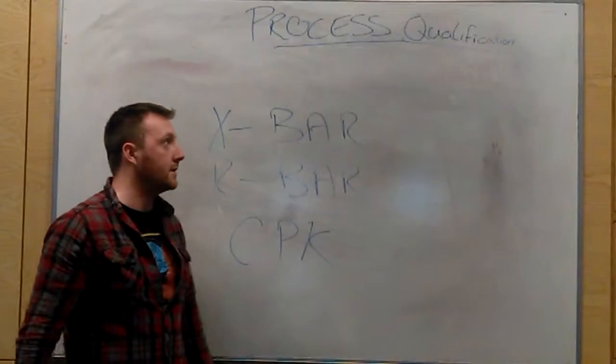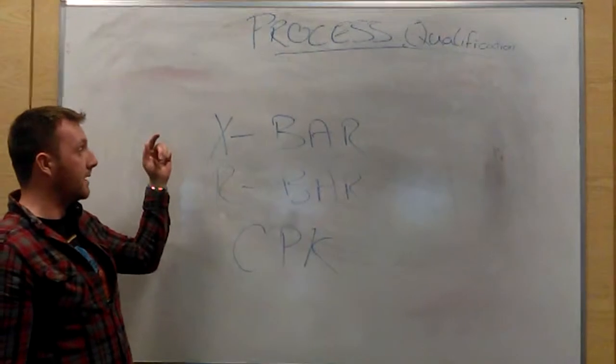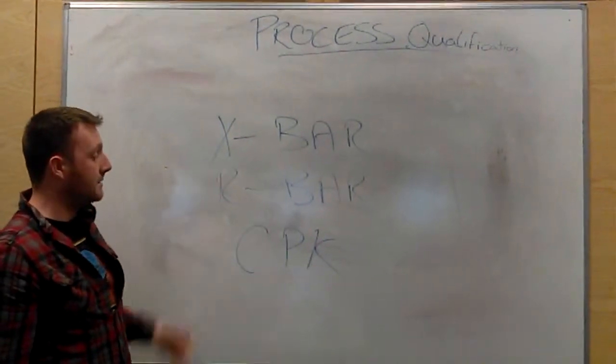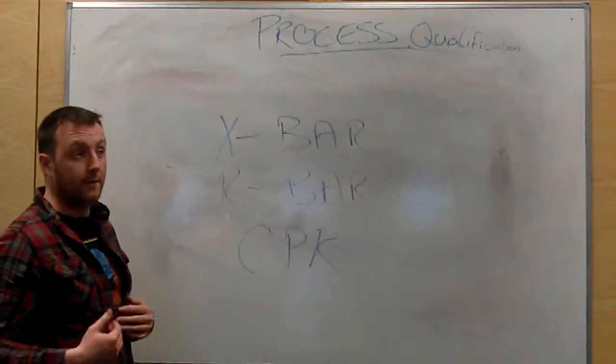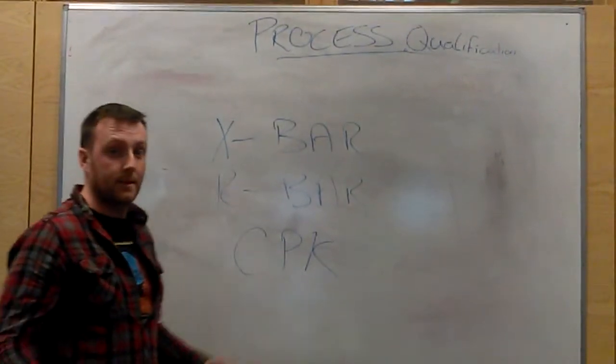The process qualification is the aspect that's going to make sure the process design is correct. Then we can use this for process verification. We use X-bar, R-bar, and CPK. X-bar will measure the difference from the average, R-bar will measure the variation in the range, but CPK will prove the process is capable of meeting its targets.